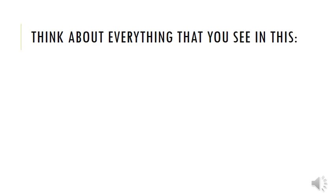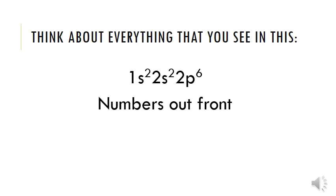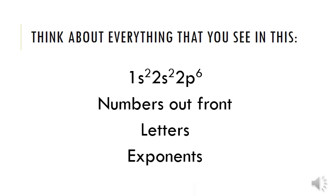Take a look at this set of numbers and letters and think about what you see here. Electron configurations are made of numbers out in front, letters that appear in the middle, and some exponents. Each of these pieces is basically making up an address for our electrons — we're finding out where the electrons are in our atoms.